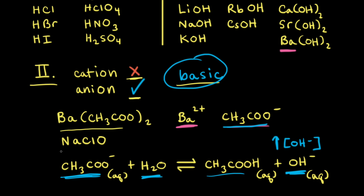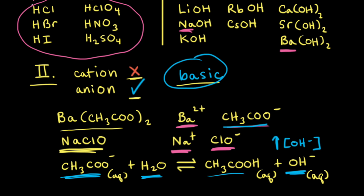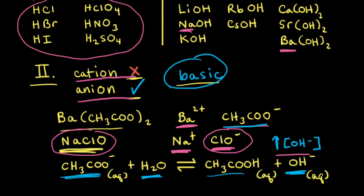As another example, let's think about sodium hypochlorite, which consists of the sodium cation and the hypochlorite anion. Since the sodium cation is from group 1A, the sodium cation will not react with water. The hypochlorite anion is the conjugate base to hypochlorous acid. Since hypochlorous acid is not on our list of common strong acids, it must be a weak acid. And if it's a weak acid, its conjugate base, the hypochlorite anion, is a strong enough base to react with water, therefore increasing the concentration of hydroxide ions in solution. So an aqueous solution of sodium hypochlorite will be basic.